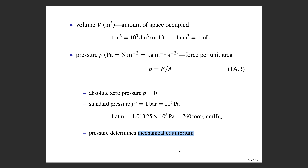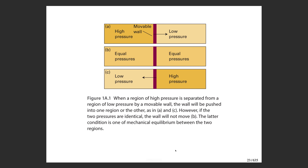Once the pressures are equal, the system will be at equilibrium. We associate the pressure variable with mechanical equilibrium in systems that have a movable wall, like a piston or a balloon. If two subsystems are at equal pressures, the wall between them will not move.